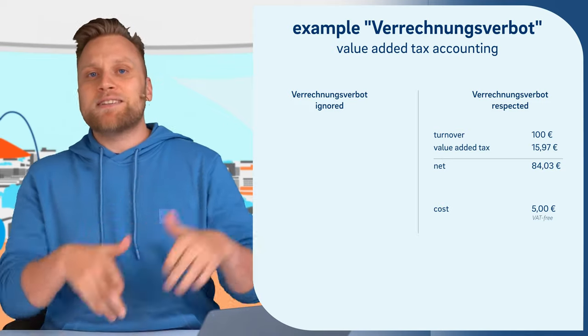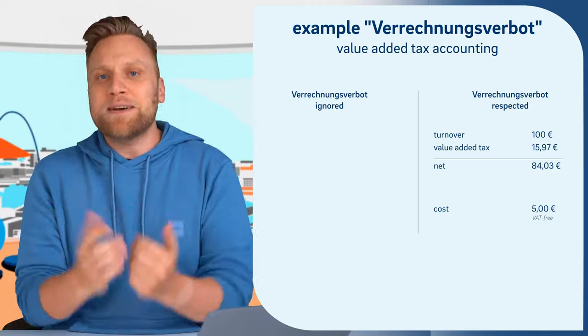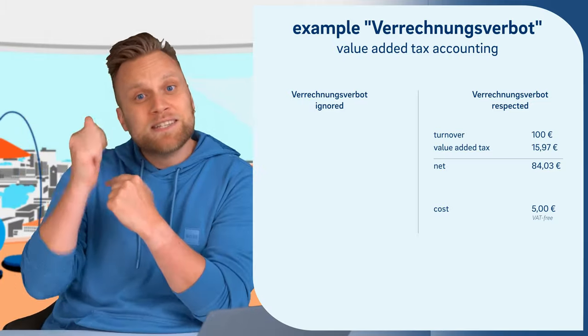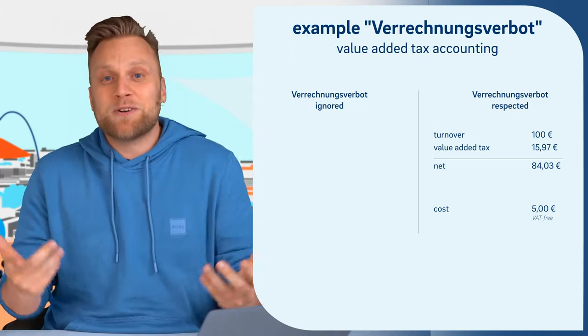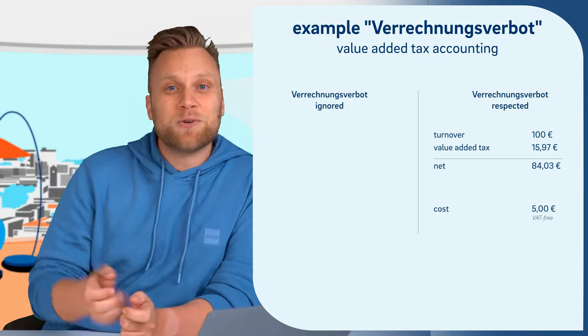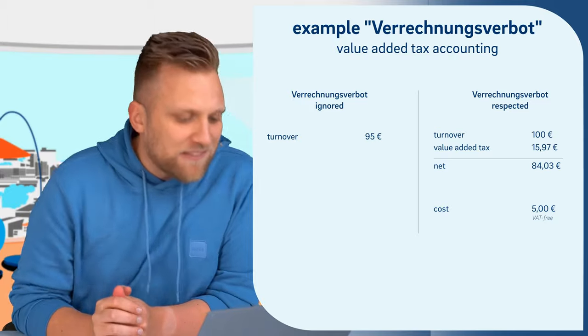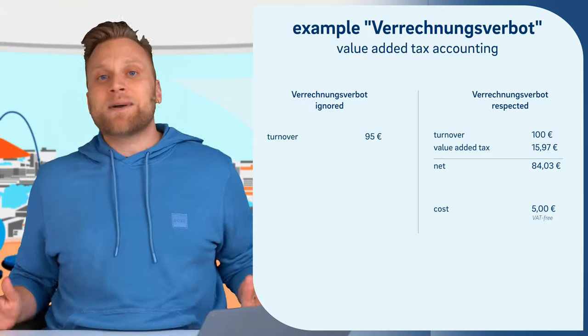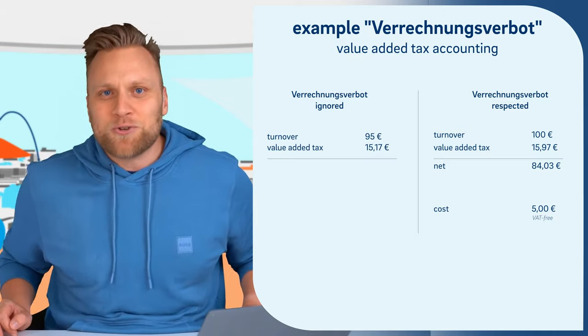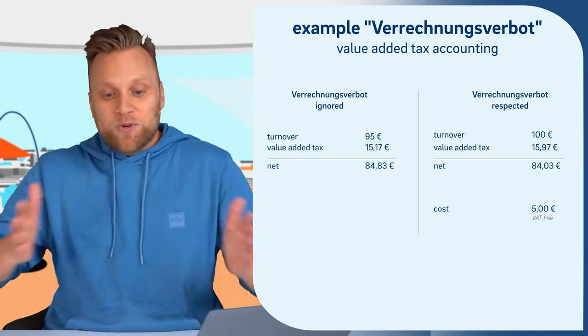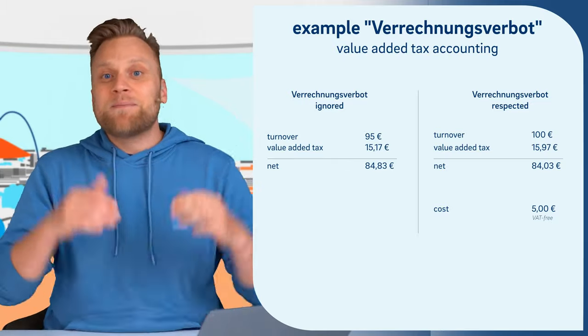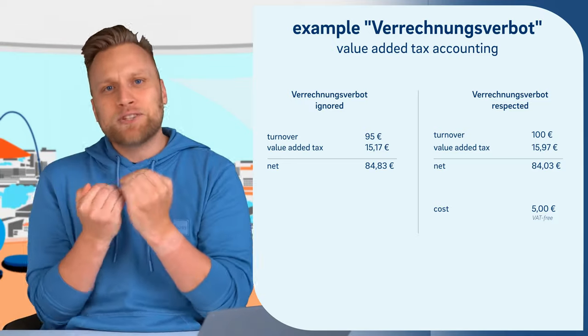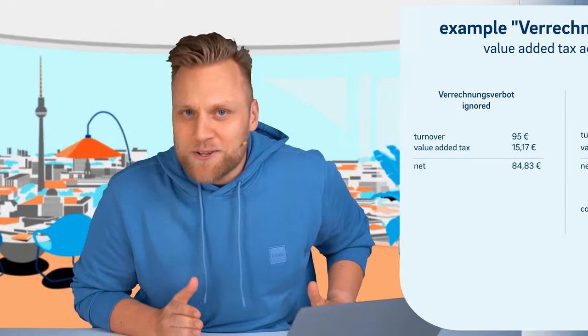If you were to record only the amount that is paid out to you — $95 — instead of the total revenue in your accounting, the calculation of value-added tax would also change. You would then calculate with a gross amount of $95, subtract the 19% value-added tax, which amounts to $15.17. This means in the end you have less value-added tax, specifically $0.80 less. That doesn't sound like a lot at first, but your invoices will usually be higher than $100. They might be small amounts individually, but over the course of an entire year, they really add up significantly. This means that by offsetting the fees, your value-added tax calculation is incorrect — and you don't want that because it will eventually lead to trouble with the tax office and a back payment of value-added tax.